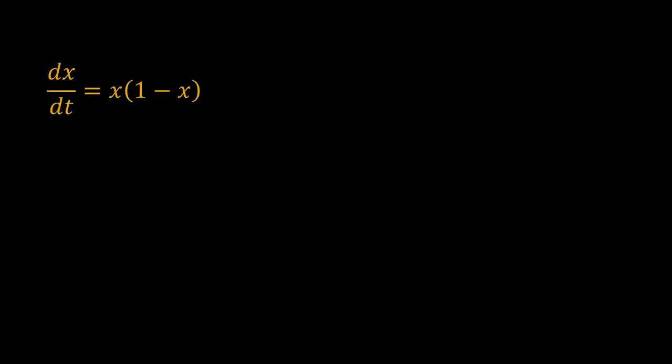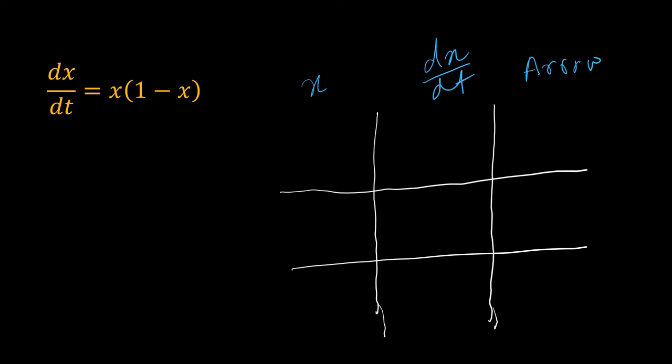You can identify the stability of steady states even without drawing the complete direction field — you can use a shortcut. Let's try that for this ODE. We will first check the stability of the steady state at x equal to 1. Draw a table like this. At x equal to 1, dx/dt is 0, so we draw a horizontal arrow.